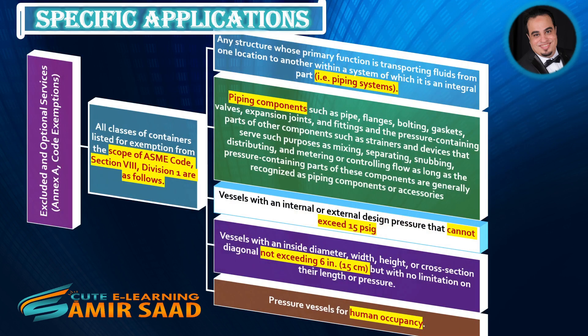Also excluded: any structure whose primary function is transporting fluids from one location to another within a system of which it is an integral part — that is, piping systems and piping components such as pipe, flanges, bolting, gaskets, valves, expansion joints, and fittings — and the pressure-containing parts of other components such as strainers and devices that serve purposes of mixing, separating, snubbing, distributing, and metering or controlling flow, as long as these are generally recognized as piping components or accessories.